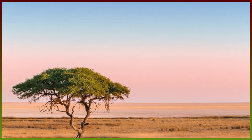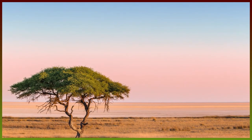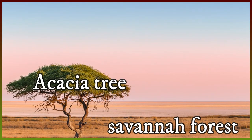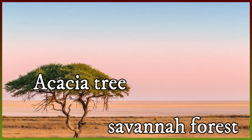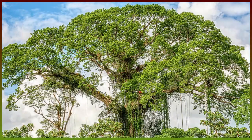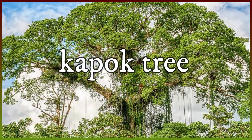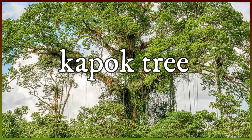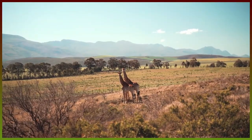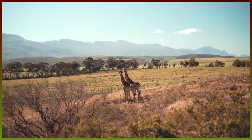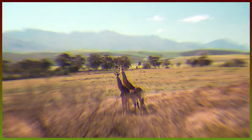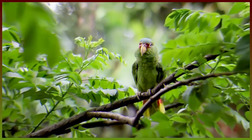In the previous video we discussed how the acacia tree structurally and behaviorally adapts to live in savannah forest. Today we will talk about another umbrella-shaped tree: the kapok tree. While the acacia tree lives in savannah forest in southern Africa, the kapok tree lives in the Amazon rainforest of Brazil.